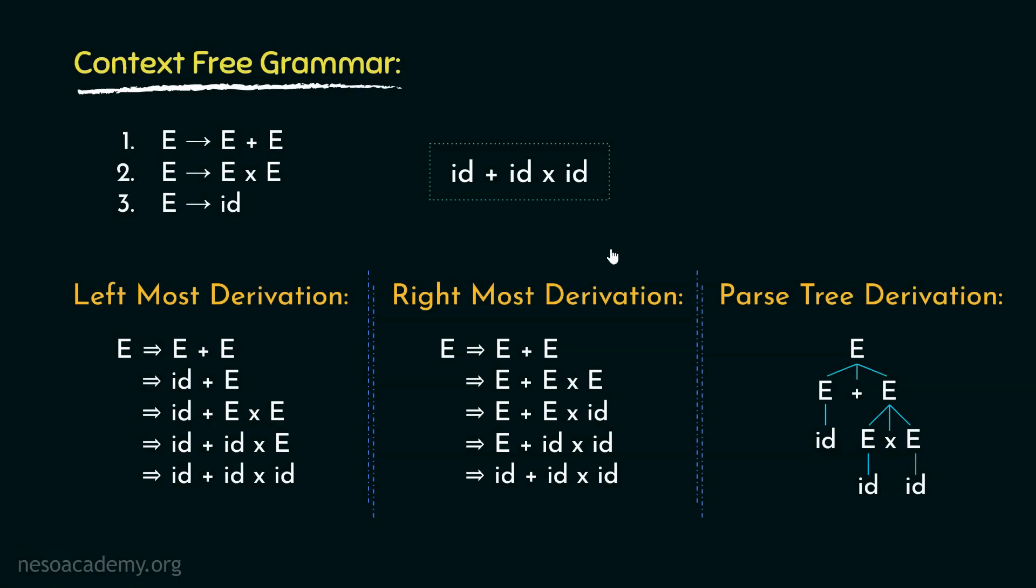Now if you all remember, in the previous session with the help of this grammar, we wanted to derive this string of terminals. We also observed that using the leftmost, rightmost, and parse-tree derivation, we finally achieved our intended string. Let's now observe if there is any other way to derive the same string using these procedures.